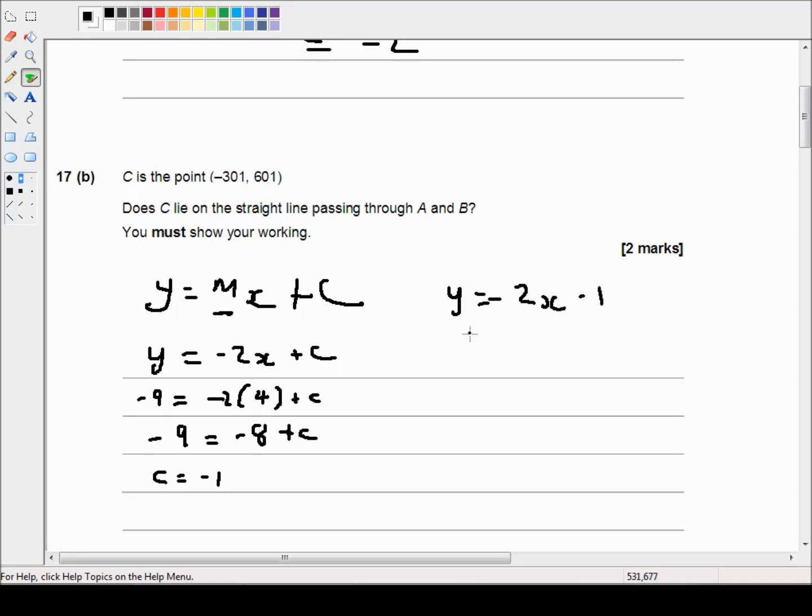And now we have the equation of the straight line, all we need to do is check that point C is on this line. So substituting in y and x, we've got 601 equals -2 times -301 minus 1.